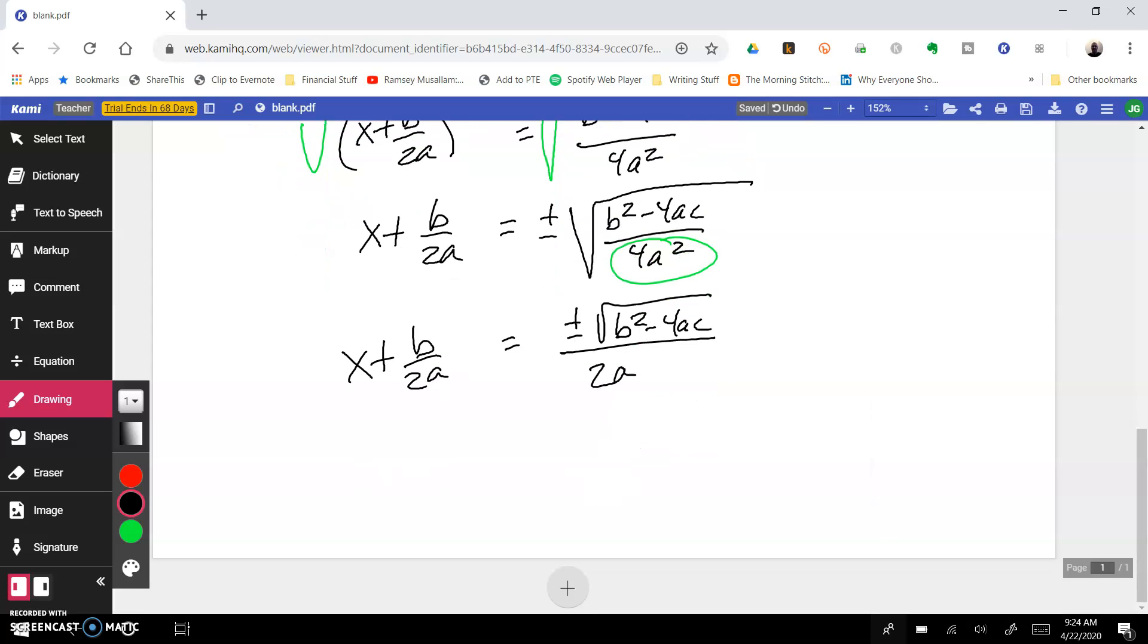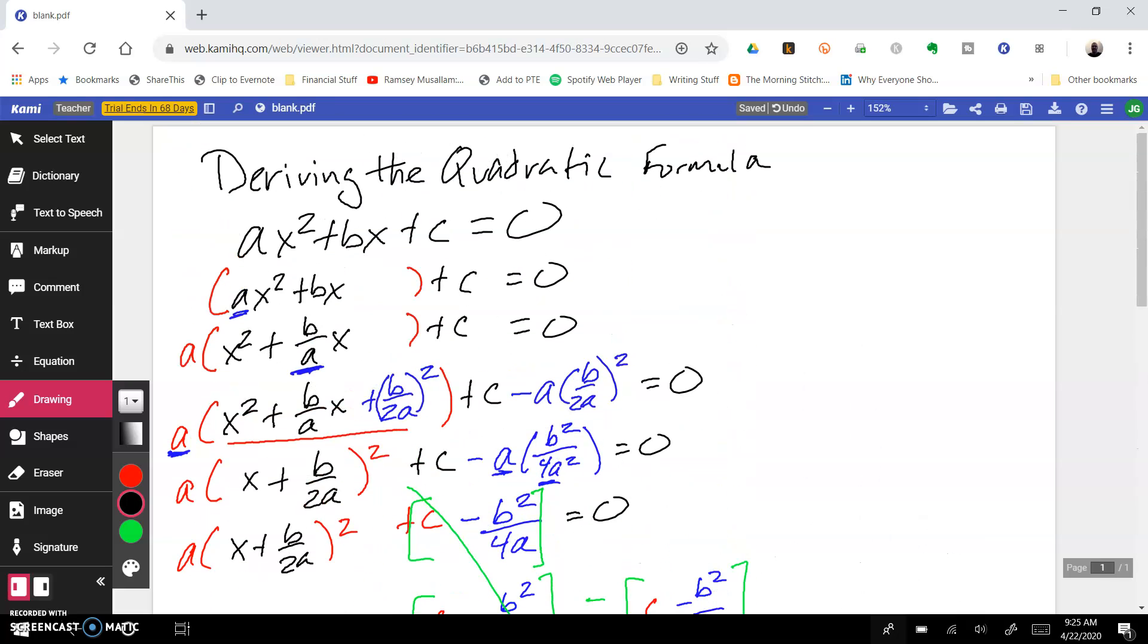We're almost there. All we have to do now is subtract this b over 2a from both sides. You can see we get x equals the opposite of b over 2a plus or minus the square root of b squared minus 4ac all over 2a. And wouldn't you know it, we've got two fractions with the same denominator. So we can go ahead and combine those into one numerator and that gives us the opposite of b plus or minus the square root of b squared minus 4ac all over 2a. And that's how you get the quadratic formula, by completing the square all the way up here on our standard form equation.